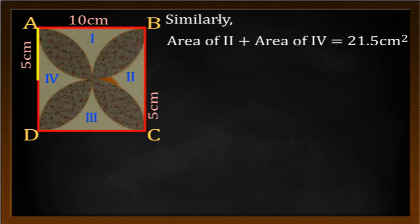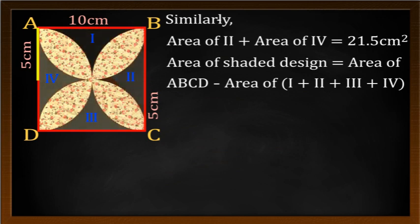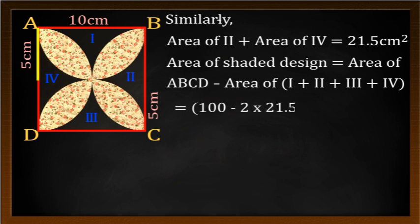So, area of the shaded design is equal to area of ABCD minus area of (1 + 2 + 3 + 4) = 100 - 2 × 21.5 cm² = 100 - 43 cm² = 57 cm².